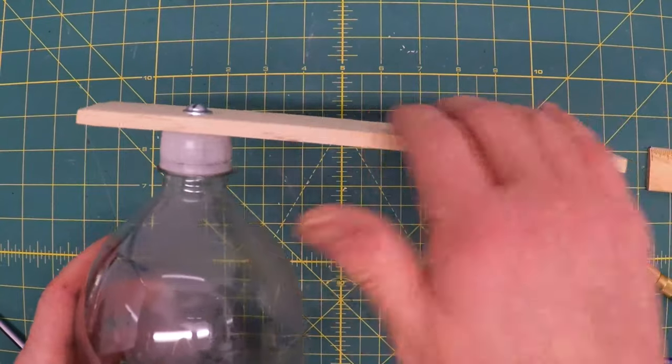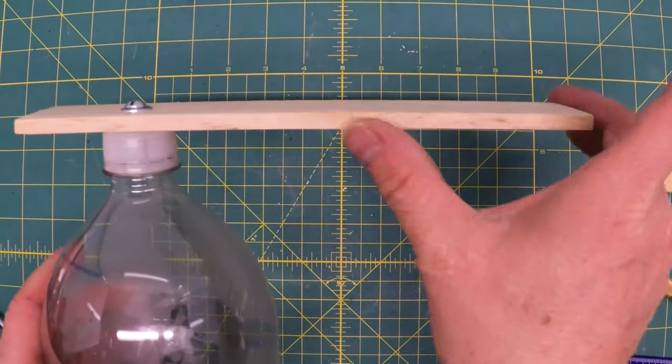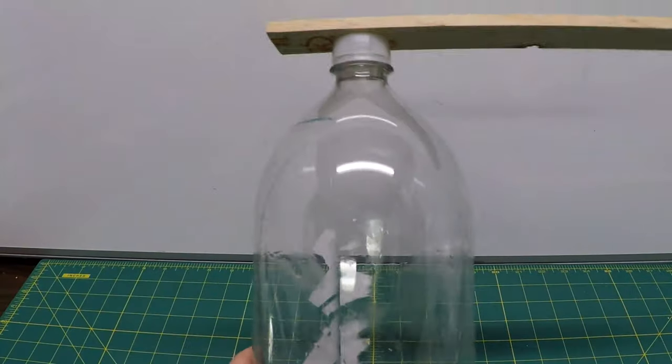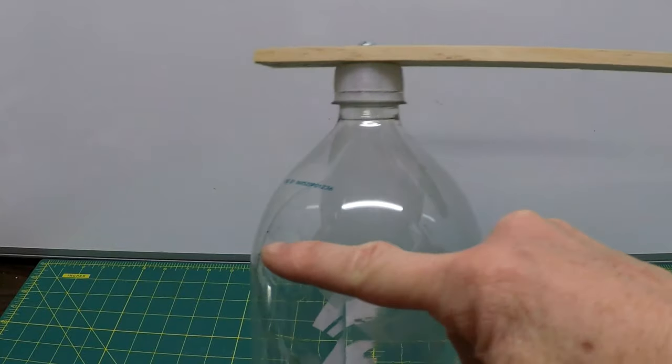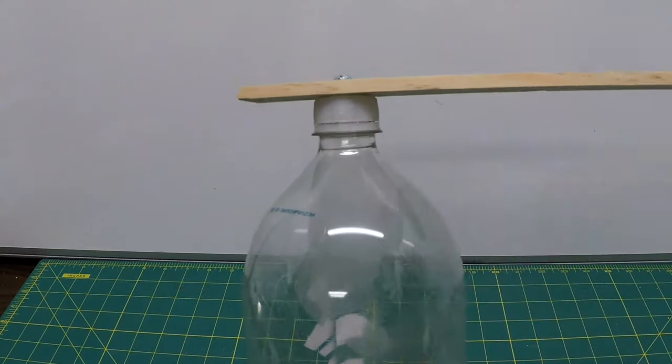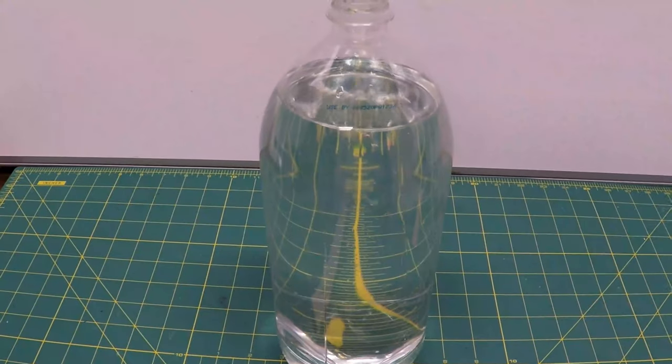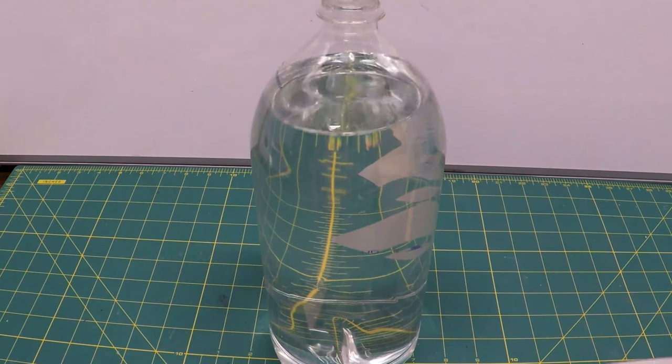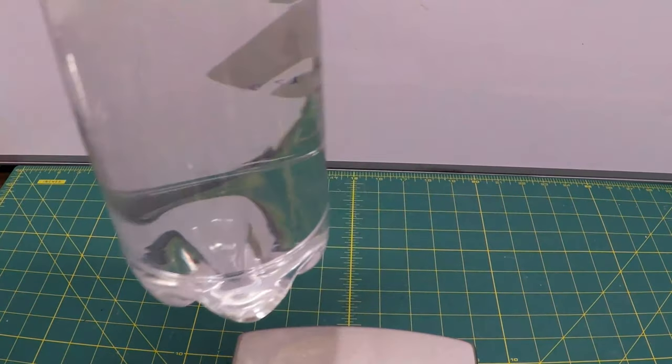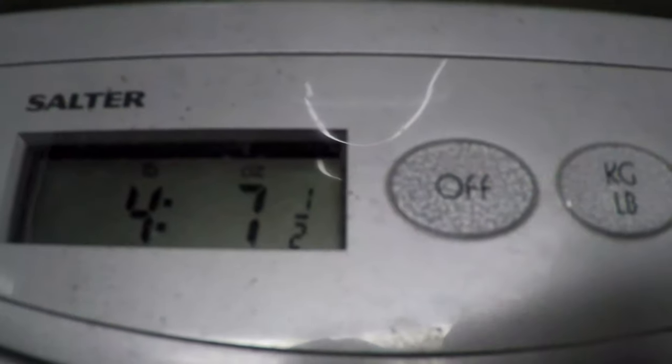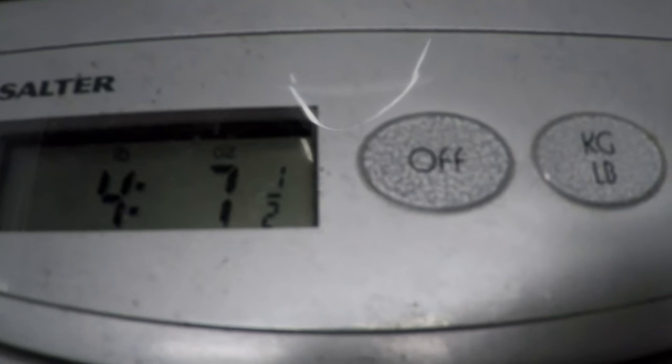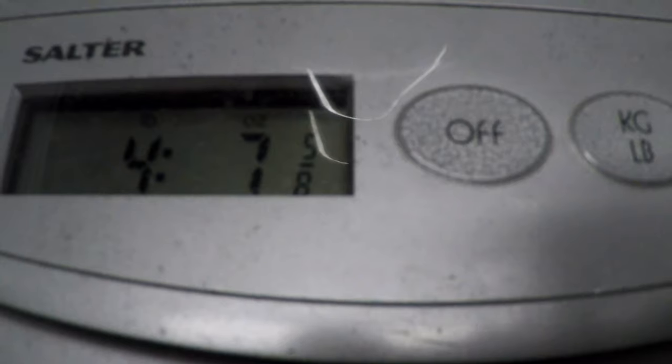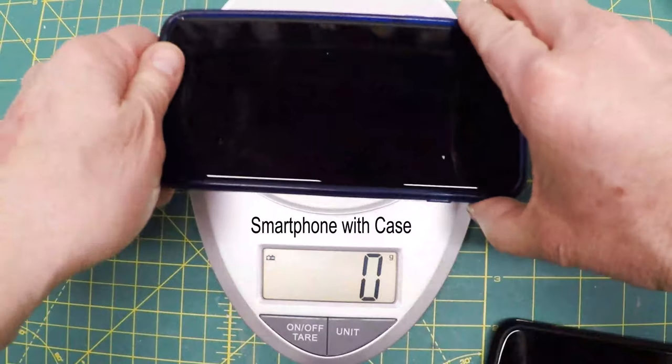You got to fill this guy up with water and you want to get it up to around here. To give you a sense of how much that is weight-wise, it's four pounds, seven and a half ounces. You can get around eight ounces and that's gonna work as a counterweight for the phone. To give you a sense of how much these things weigh, that's an iPhone, it's 236 grams, 8.3 ounces with a cover on it.